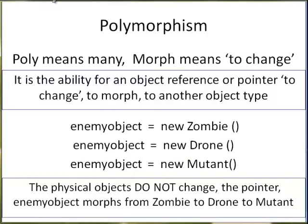Polymorphism. Poly means many, morph means to change. An advanced object oriented programming concept. Put simply, polymorphism implies many changes. It is the ability for an object reference, pointer, or variable to change — to morph to another type.